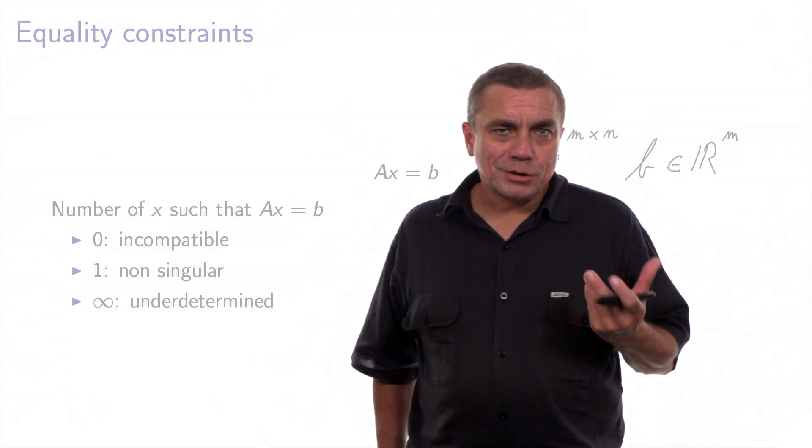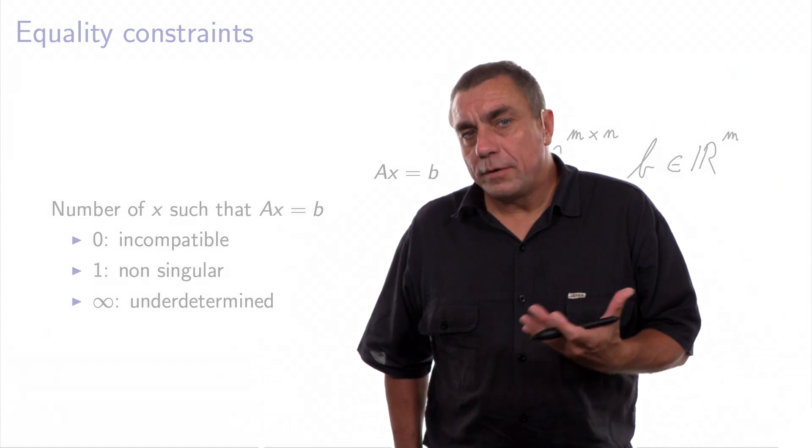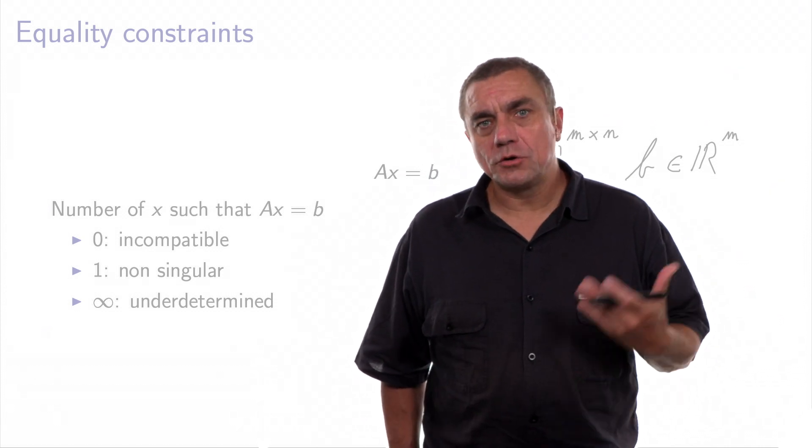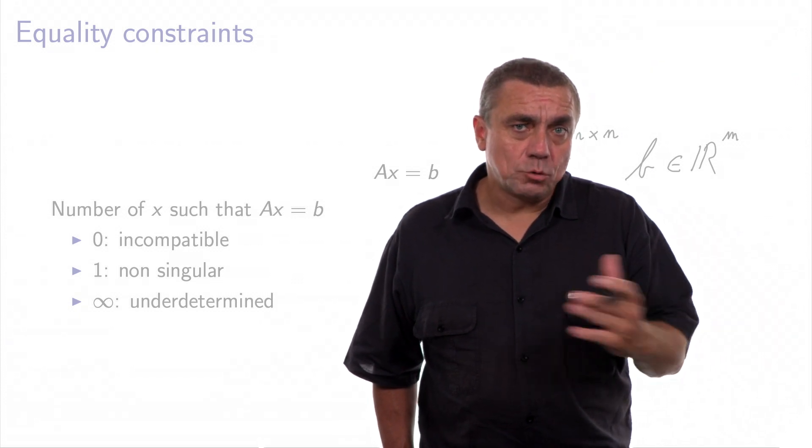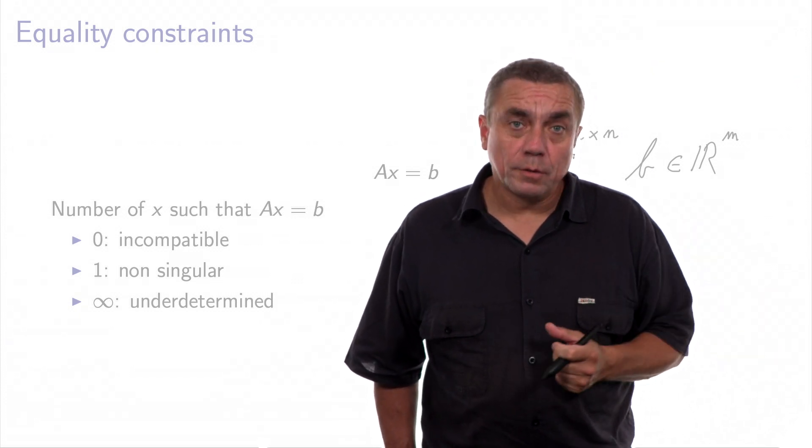Basically, in the context of optimization, the only case where we have some difficulties, or where the problem is actually interesting, is when this system Ax equals b has an infinite number of solutions.